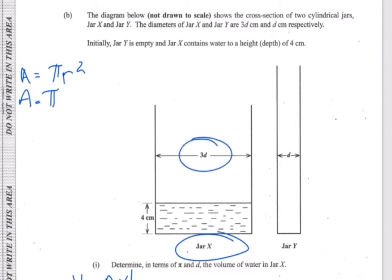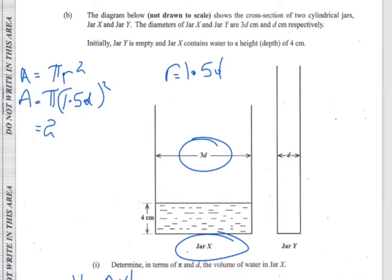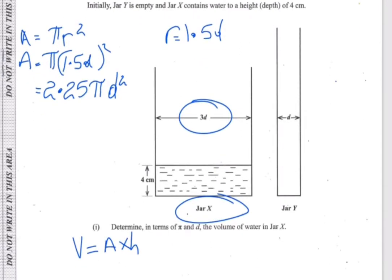Now for the radius: the diameter is 3d, and the radius is half of the diameter, so the radius is 1.5d. We square that: 1.5d squared. 1.5 squared gives us 2.25, so the area equals 2.25πd².